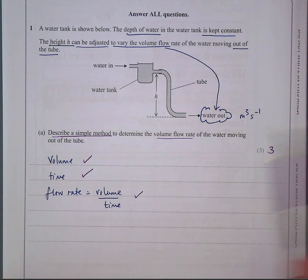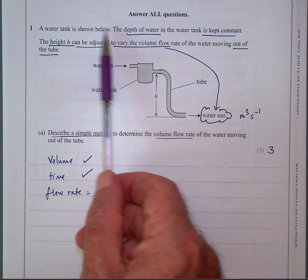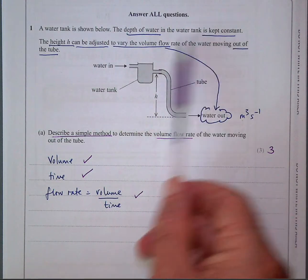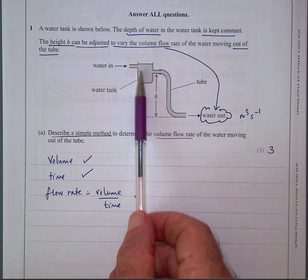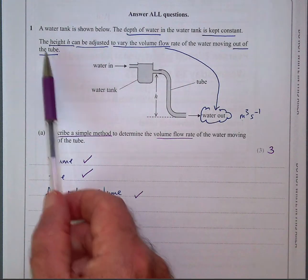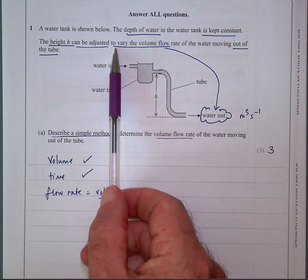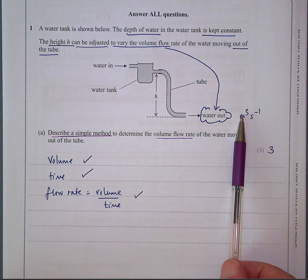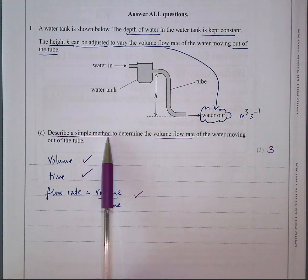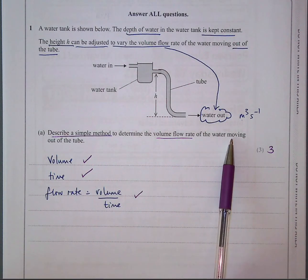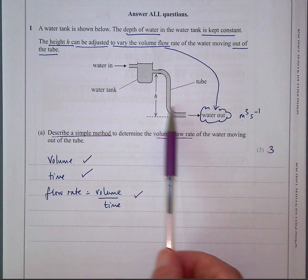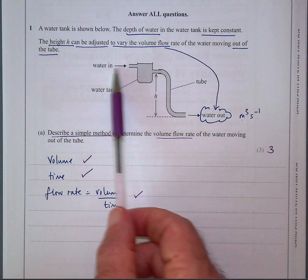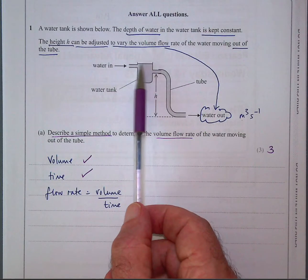So the first question is, a water tank is shown below. The depth of the water, they mean the depth at the bottom, is kept constant. What they mean is the height of the water is kept constant here, so this is giving it pressure which causes it to flow. The height h can be adjusted to vary the volume flow. So the volume flow is here of the water moving out of the tube at the bottom. That will be meters cubed per second. They want you to describe a simple method to determine the flow, the volume flow rate of the water moving out. So basically at this height, how much volume flows out per second? Well, there'll be a constant flow rate if you can keep the head of the water filled up. So assuming this is happening, all you've got to do is measure the volume for a given amount of time.